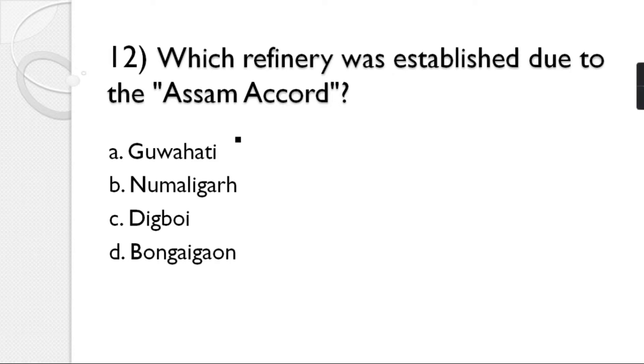Question number 12: Which refinery was established as a result of the Assam Accord? Options: Guwahati, Numaligarh, Digboi, Bozali. The correct answer is option B — Numaligarh, referring to the Numaligarh Refinery Limited (NRL).